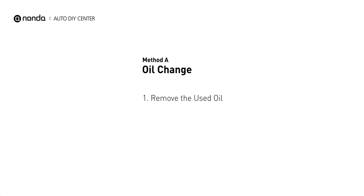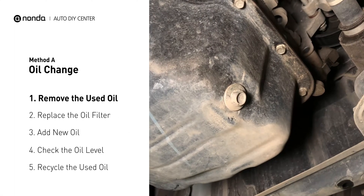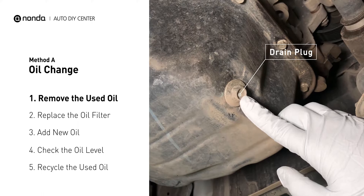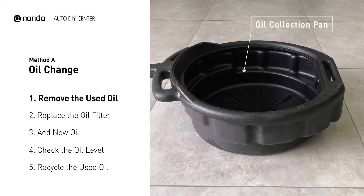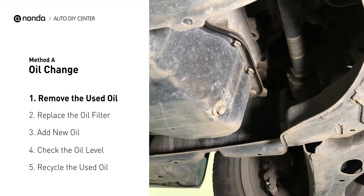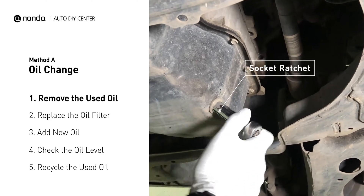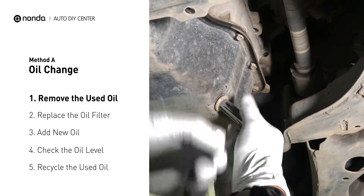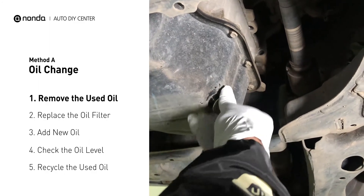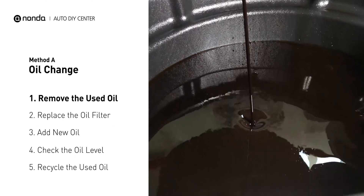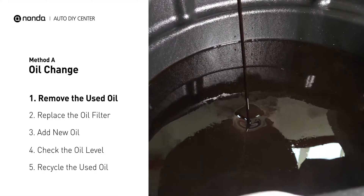Method A: Oil Change. Locate the oil drain plug on your vehicle and place an oil collection pan underneath it. Use a socket ratchet to remove the plug from the oil pan on your vehicle. Once the plug is removed, the oil should start flowing out into your collection pan.